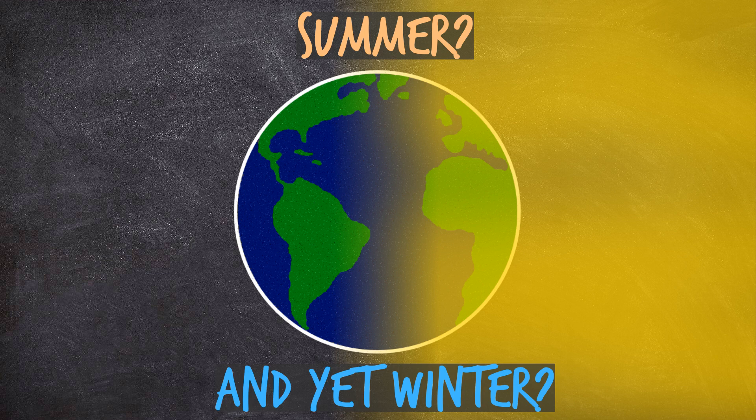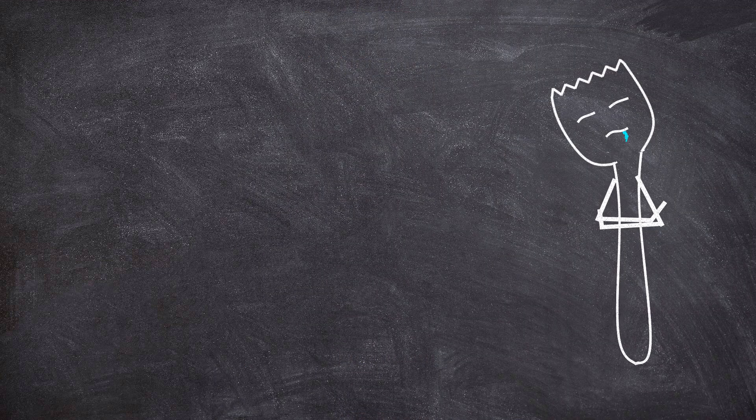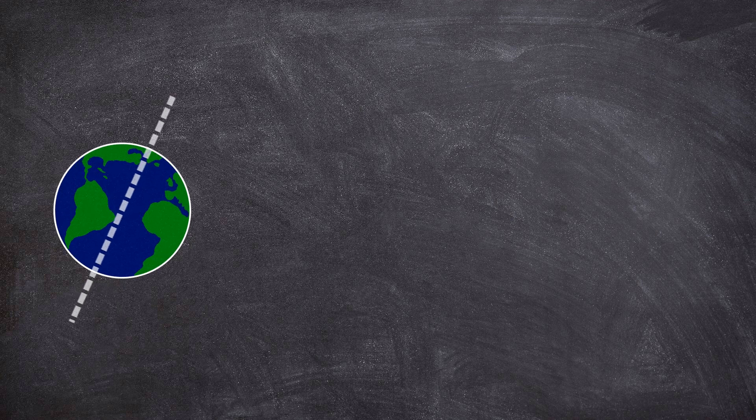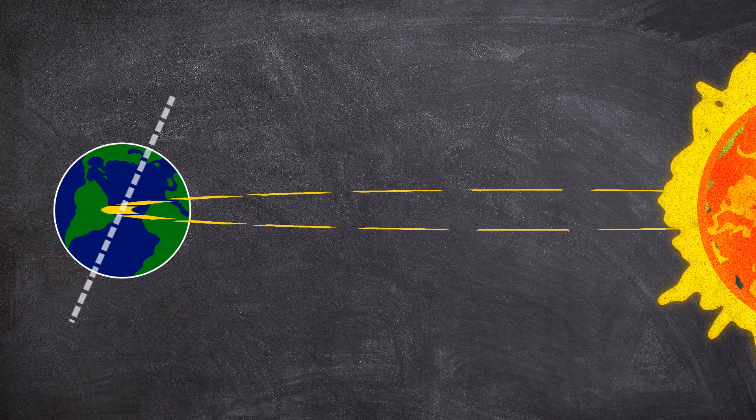So as I'm sure most of you knew, seasons have nothing to do with aphelion and perihelion. The real reason is because the Earth's axis of rotation has about a 24 degree tilt relative to the plane it orbits the sun. And this definitely does cause the length of days to vary throughout the year.